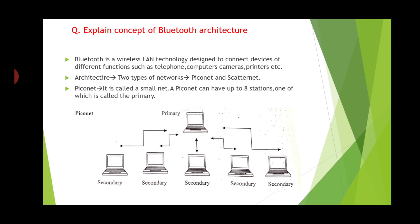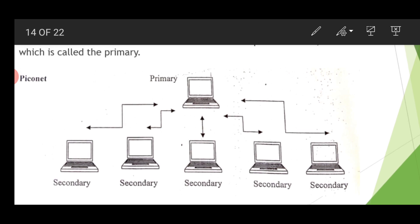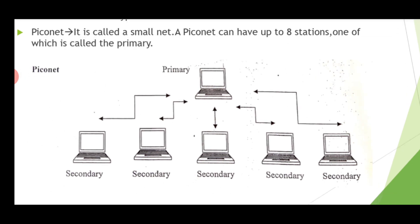Now we will see the concept of Bluetooth architecture. Bluetooth is a wireless LAN technology designed to connect devices of different functions such as telephones, computers, cameras, printers, etc. There are two types of networks used in Bluetooth architecture: one is the Piconet and another is the Scatternet. A Piconet can have up to eight stations, one of which is called the primary and the remaining are called secondary. The Piconet structure is shown in the diagram. The primary host can send information to all the remaining hosts, which are called secondary.